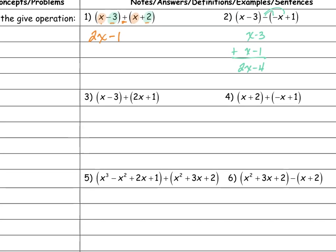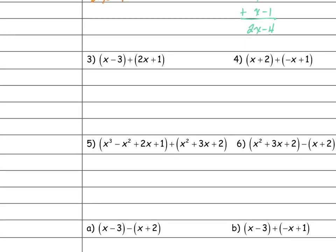Number three gives me x minus 3 plus 2x plus 1. Adding them together: x plus 2x is 3x, and negative 3 plus 1 is negative 2.